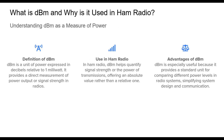Let's turn the conversation to dBm and why it's used in ham radio. dBm, or decibels relative to 1 milliwatt, is widely used in ham radio to measure power output. It offers an absolute reference for power, unlike dB which measures relative gain or loss. For instance, 0 dBm represents 1 milliwatt of power, while positive or negative dBm values show power levels above or below this reference. The key advantage of dBm is that it provides a standard unit for comparing different power levels and radio systems, simplifying system design and communication.